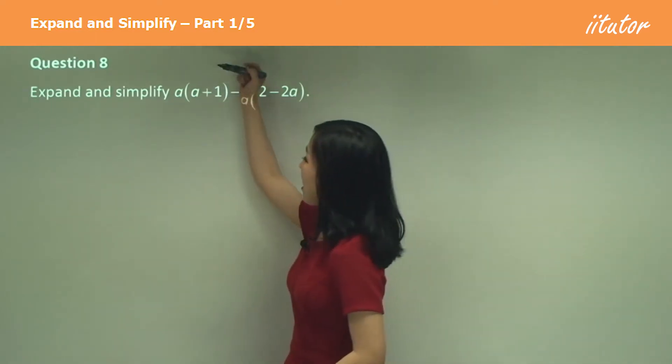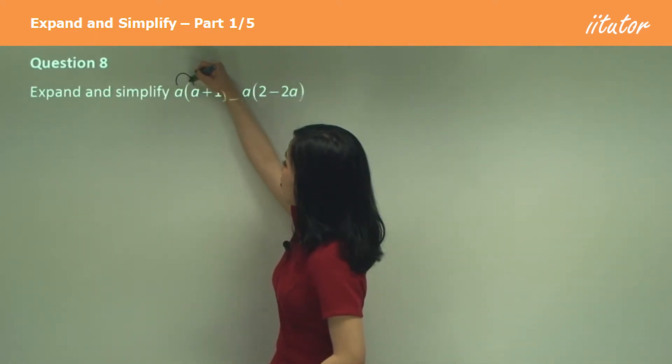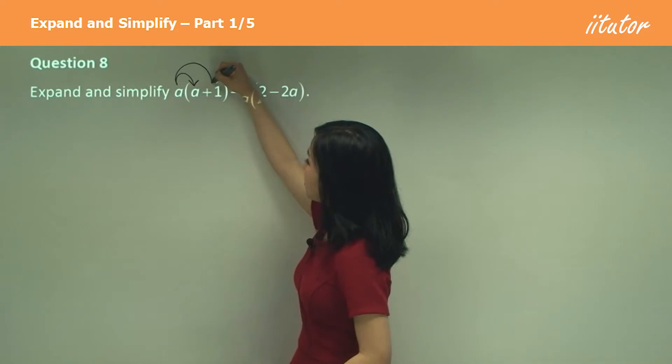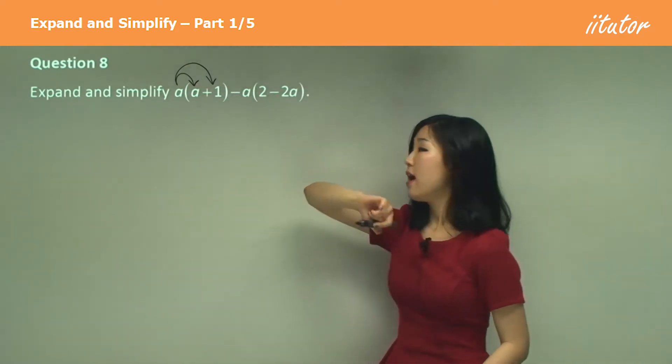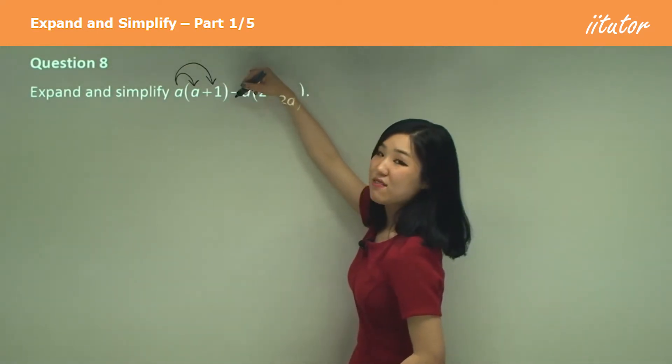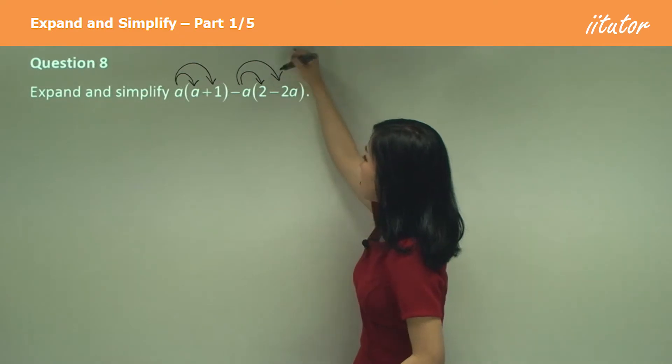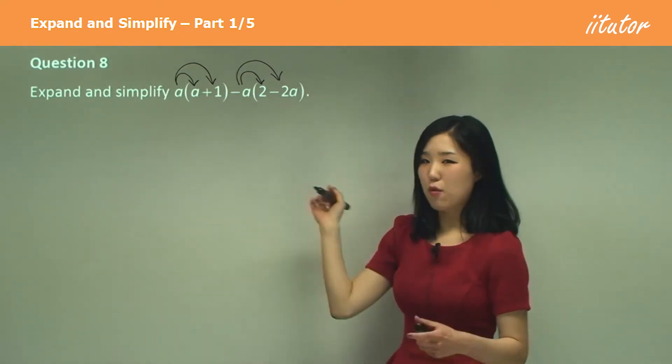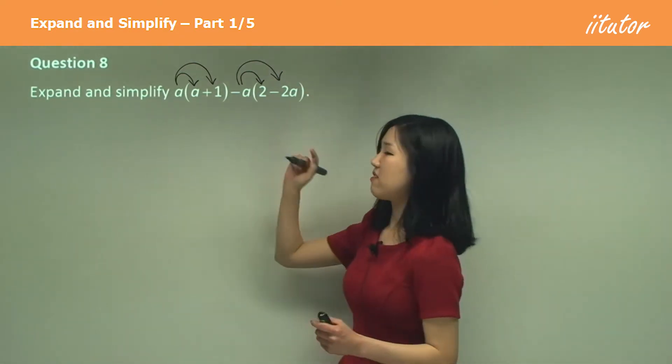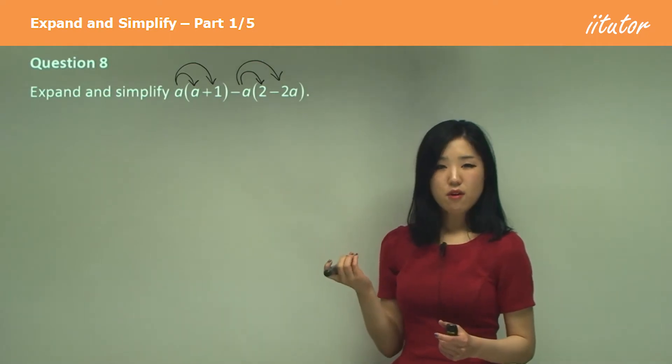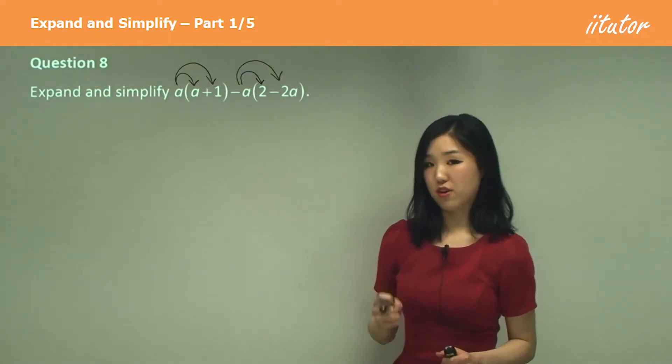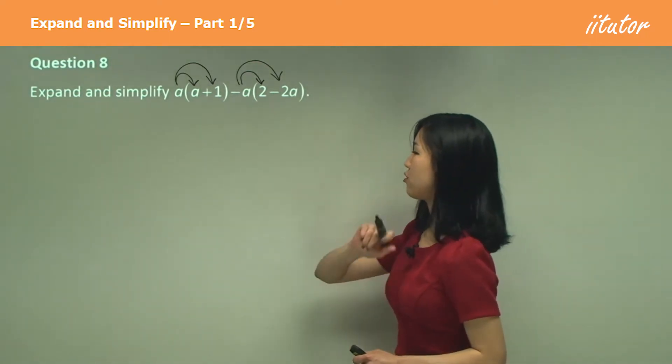So here I want to multiply a with the a and also the positive 1. And this time I want to multiply, this time it's negative a in front. So I want to multiply the negative a to the 2 and negative a to the negative 2a. So see how we've got different signs, we've got negative and negative, so that's why I'm asking you to be extra careful. Okay so let's do it.